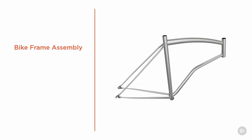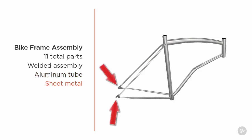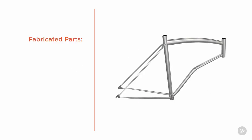For our example, we'll build a factory to create the bike frame assembly shown in this picture. Notice it's a welded assembly with 11 total parts, and it consists of parts made from aluminum tubing that will be fabricated, sheet metal parts that will be laser cut, and cast parts that will be purchased from an outside vendor, so they will not need any processing before going to the welding station.